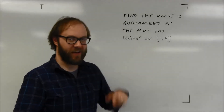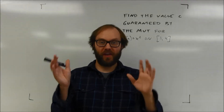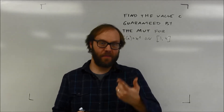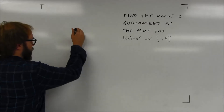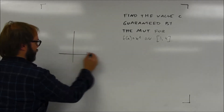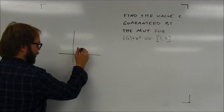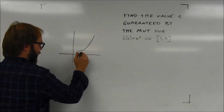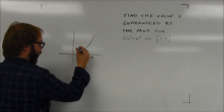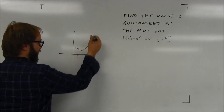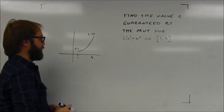This time the function is x squared on the interval from 1 to 4. This is a closed interval. We have y equals x squared, which is a parabola. We're looking at the point going from x equals 1 over to x equals 4. That's the point (1, 1) and the point (4, 16), which we substitute into the function.